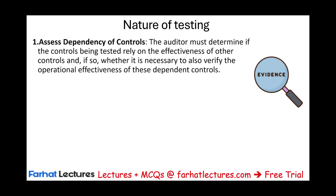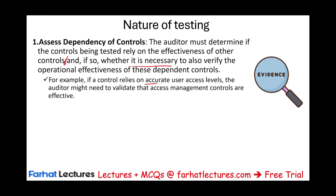The auditor must also assess dependency of controls — determining if the control being tested relies on the effectiveness of other controls. If so, it may be necessary to also verify the operational effectiveness of those dependent controls. For example, if controls rely on accurate user access levels, the auditor needs to validate that access management controls are effective.